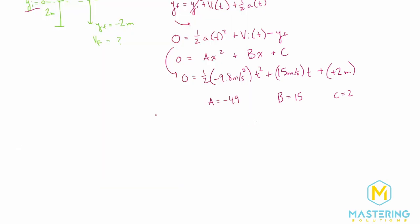Since we can't have a negative time, our final answer for how long the ball is in the air is 3.2 seconds.